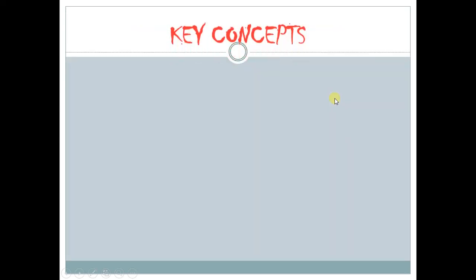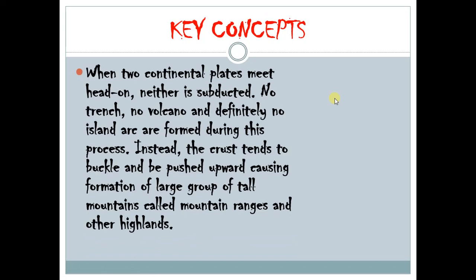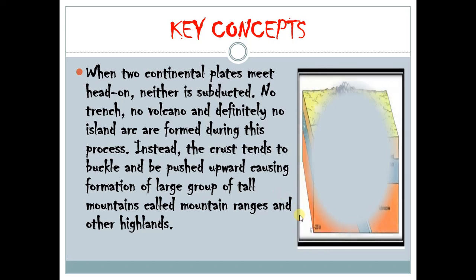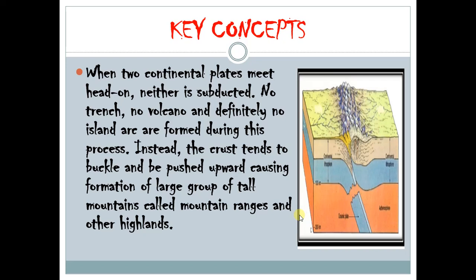Now, why would that happen? When two continental plates meet head-on, neither is subducted. The one that is heavier would subduct and there would be melting in that area — but since both are continental, there would be no trench, no volcano, and definitely no island arcs formed during this process. Instead, the crust tends to buckle and be pushed upward, causing the formation of large groups of tall mountains, fold mountain ranges, and other highlands. Since there would be no subduction zone, there would just be collision — this area would just buckle up and lead to the formation of mountain ranges and highlands.